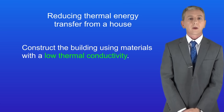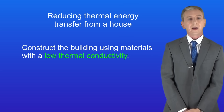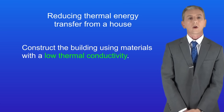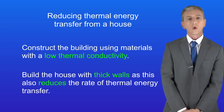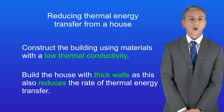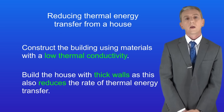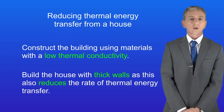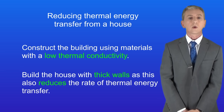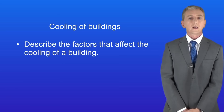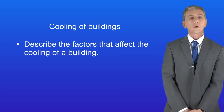So as we've seen, we can reduce thermal energy transfer from a house by constructing the building using materials with a low thermal conductivity. The second thing we can do is build a house with thick walls, which also reduces the rate of thermal energy transfer. Okay so hopefully now you should be able to describe the factors that affect the cooling of a building.